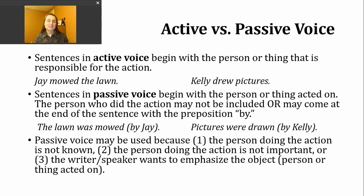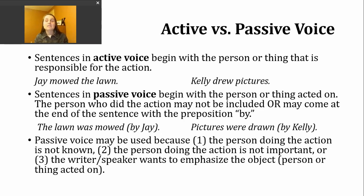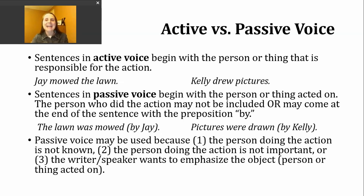As we work through this, there might be a few people wondering why does this exist? Why are we making it so complex? There are good reasons. We might use passive voice when we don't know the person or thing responsible for the action. Another instance is if the person or thing responsible for the action just isn't important — we really want to focus on the object or thing that is being acted on. That's one way to have people focus on it: have that come at the beginning of our sentences.